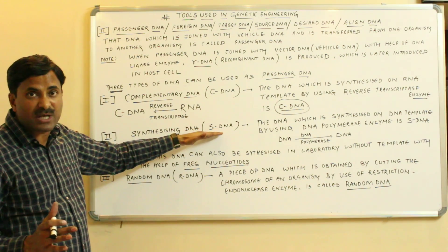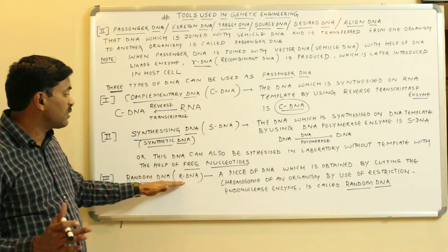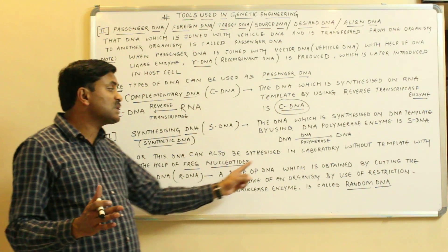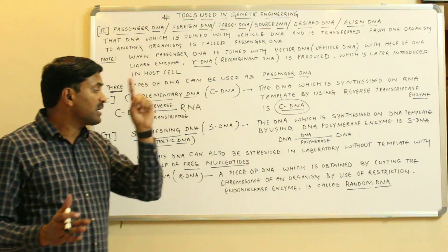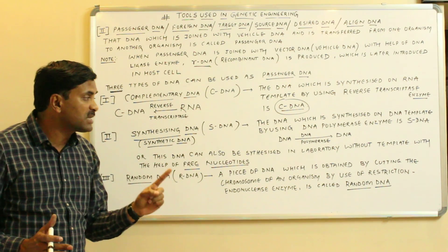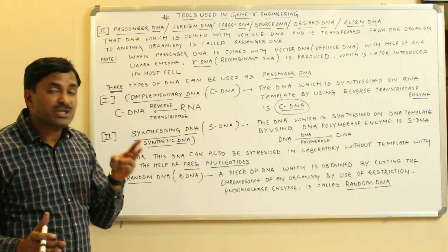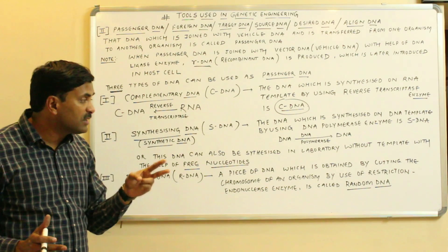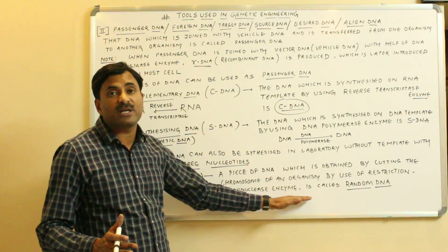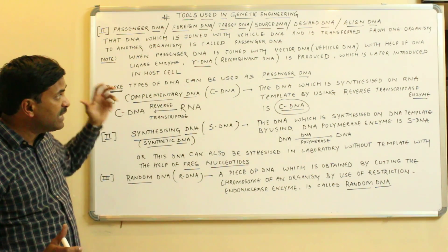The third type is the random DNA, also called R-DNA. A piece of DNA which is obtained by cutting the chromosome of an organism by the use of restriction endonuclease enzyme is called random DNA. So we must know that three DNAs can be used as passenger DNA: cDNA, sDNA, and random DNA.